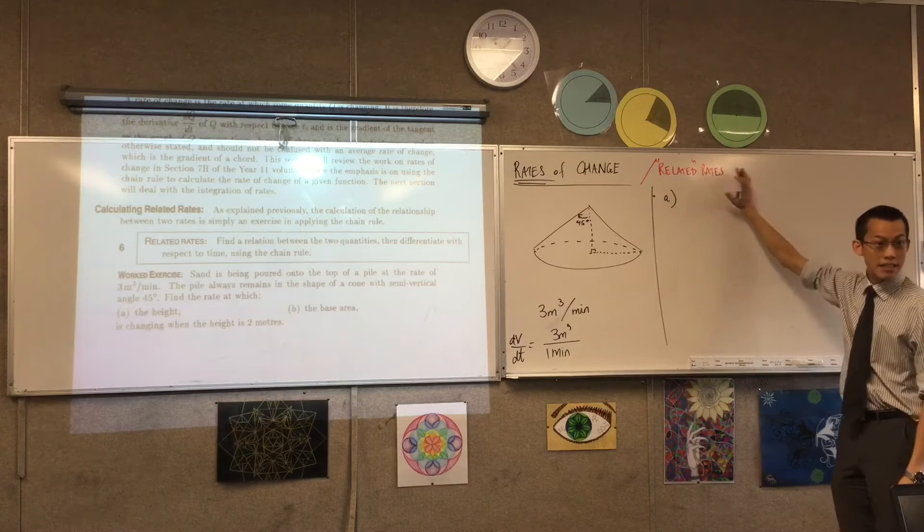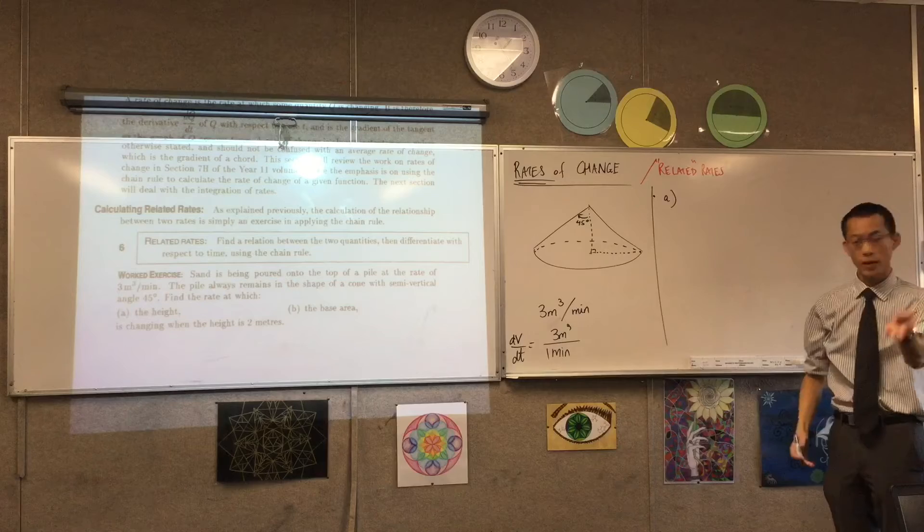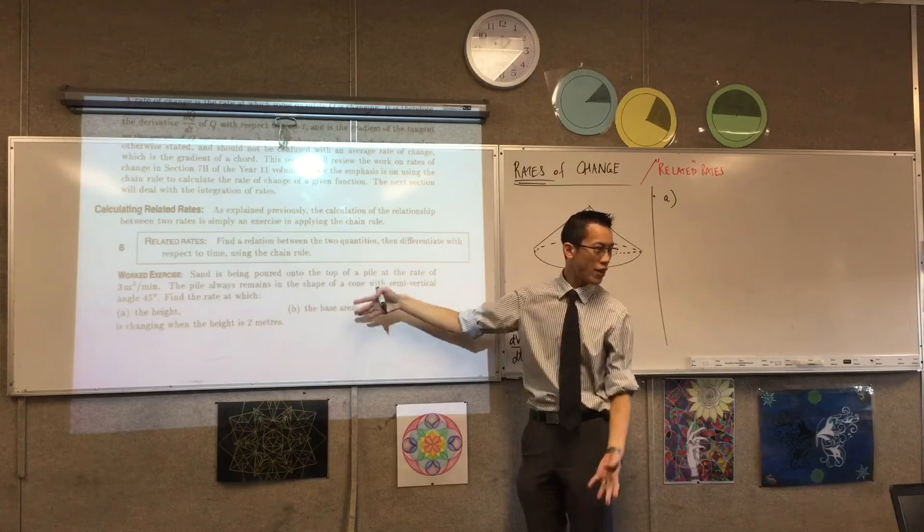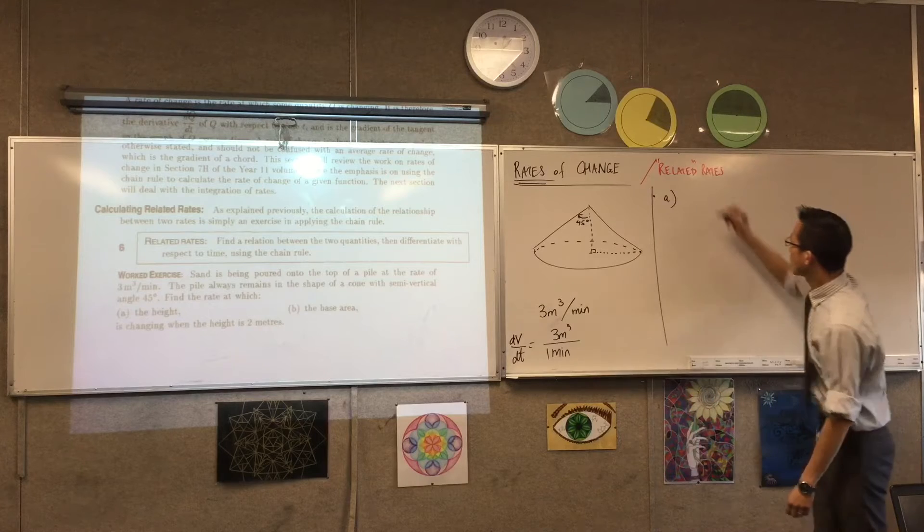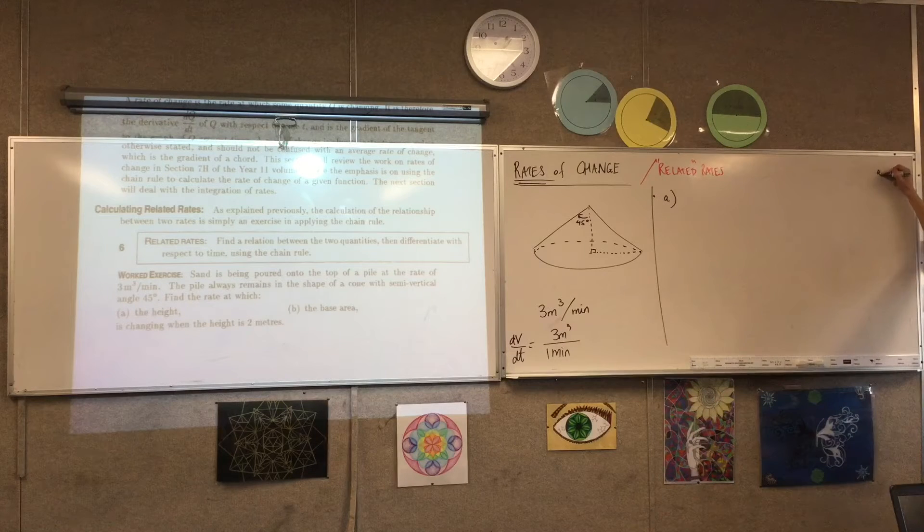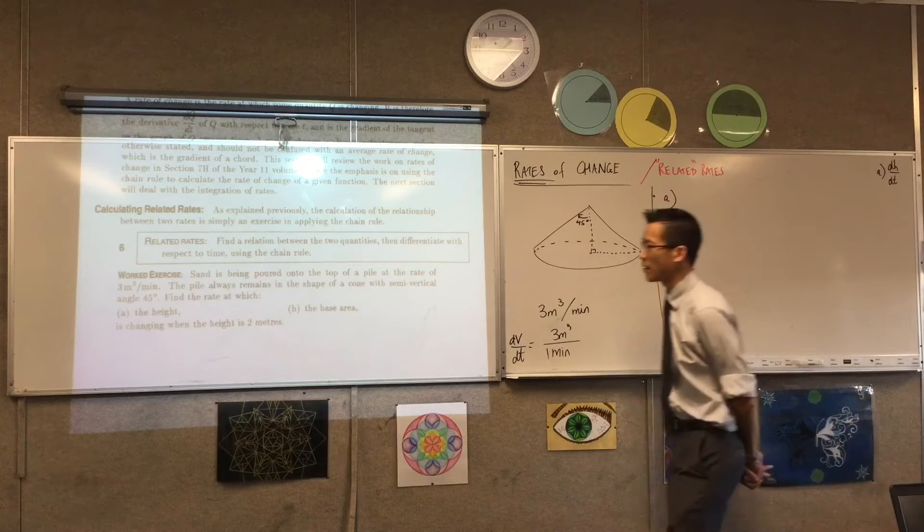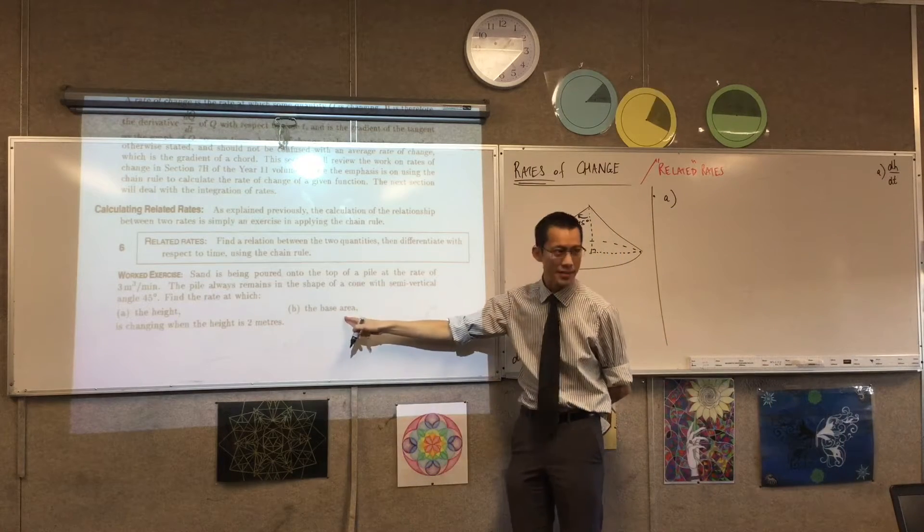I like to write down, right at the outset, what I'm actually going after. Because you're going to go after different things, and you want to state where you're headed in the first place. So I'm going to say, actually I'll write it over here, and then I can turn off my projector. For part A, I'm after DH/DT. And for part B, I'm after the base area.